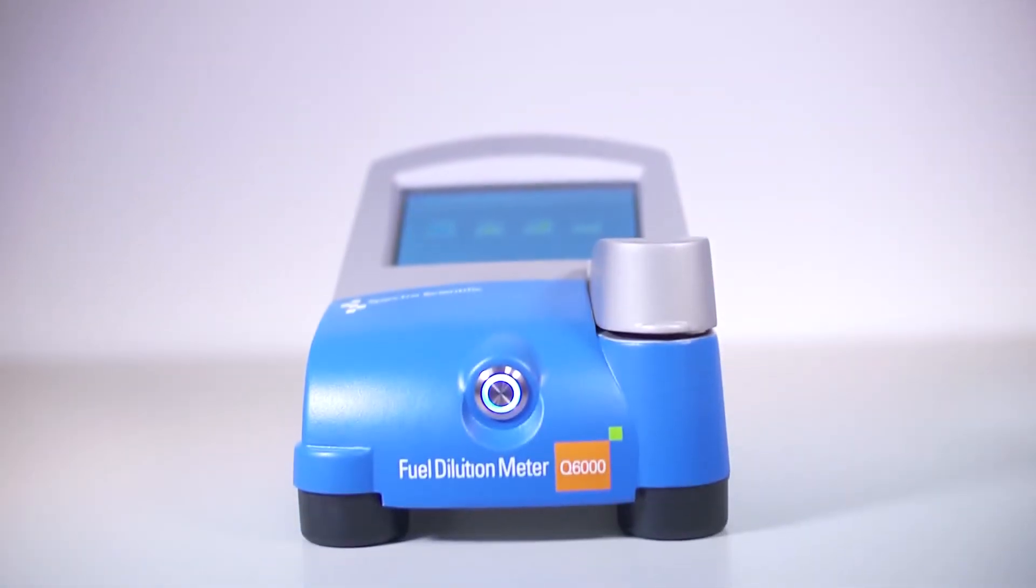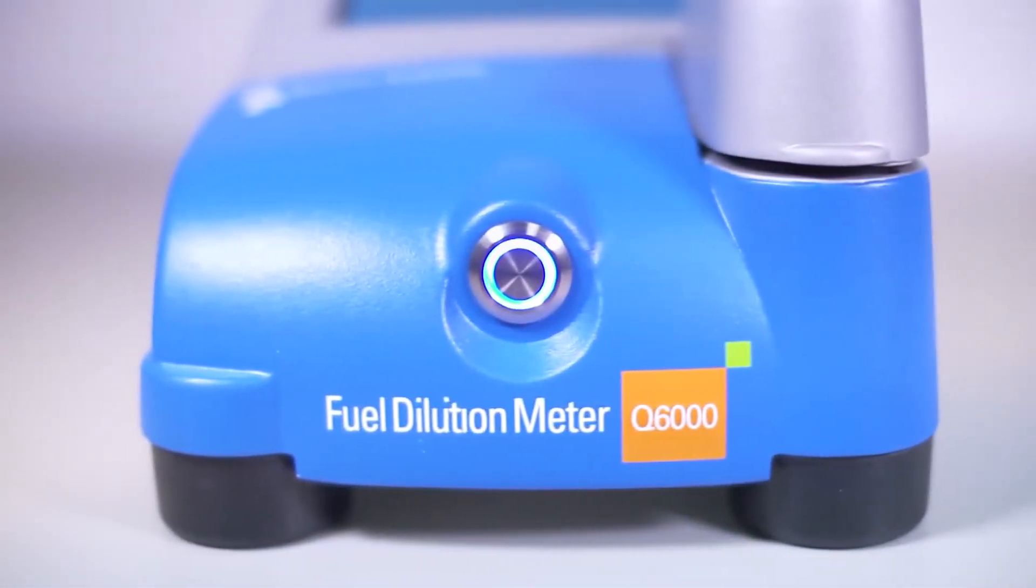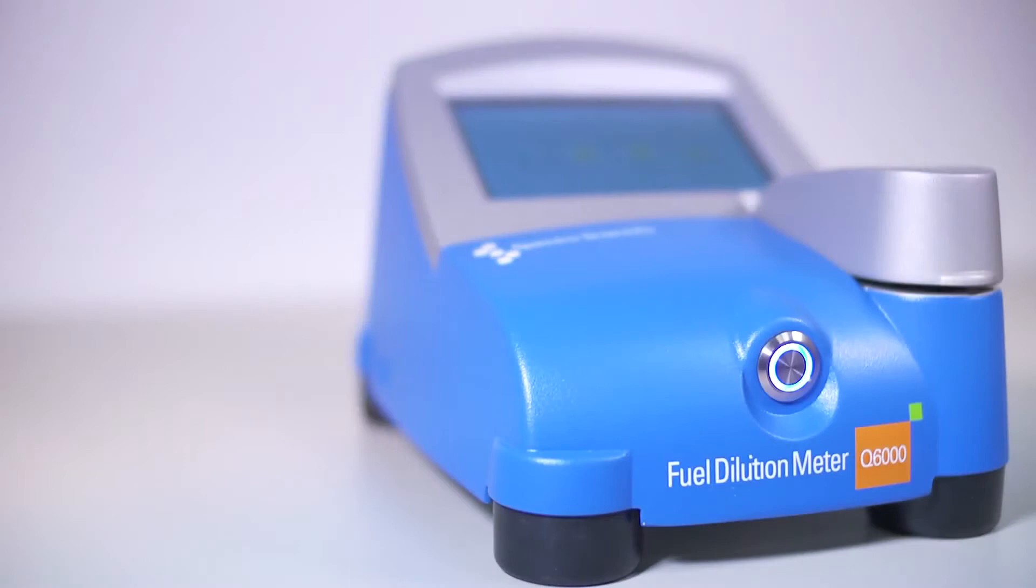The Q6000 is a portable fuel dilution meter that can be used in the laboratory or the field to provide rapid and accurate measurements of fuel contamination in engine oil.